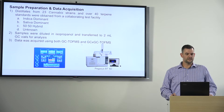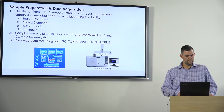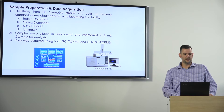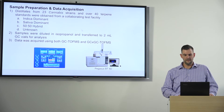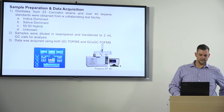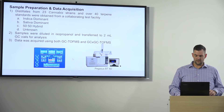Just to look a bit at the sample preparation and data acquisition strategy: we received distillates from 23 different cannabis strains and over 40 different terpene standards from a collaborating test facility. We received indica dominant strains, sativa dominant strains, and a 50-50 hybrid mixture as well as some unknowns. Samples were simply diluted in isopropanol upon receipt and then transferred to two milliliter GC vials for analysis. The data was acquired on a GC-TOF system as well as a GCxGC-TOF system, and all data acquisition and instrument parameters were controlled with our software ChromaTOF.